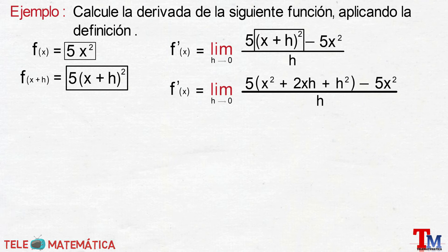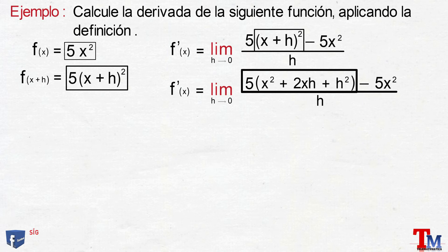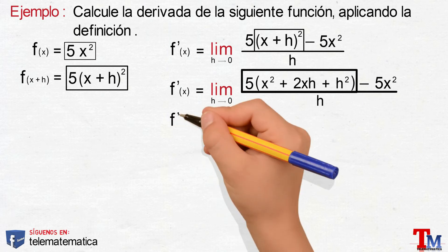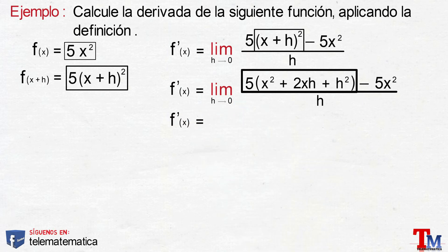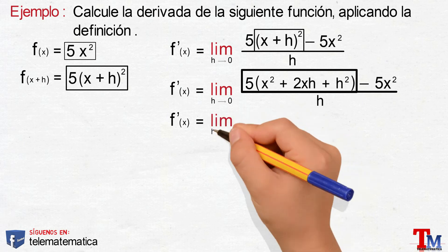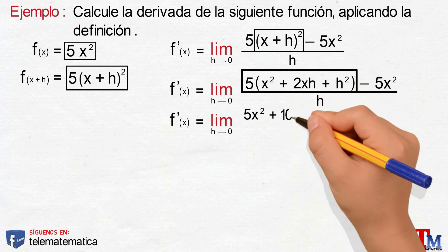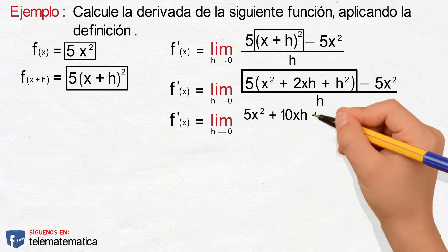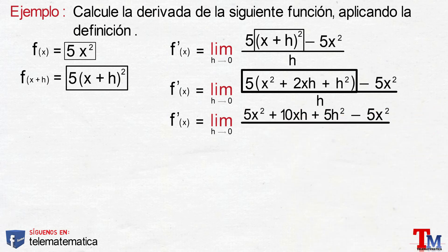Para el siguiente paso, resolveremos la multiplicación aplicando la propiedad distributiva, y nos quedaría que la derivada de la función va a ser igual al límite cuando h tiende a 0, de 5x elevado al cuadrado más 10xh más 5h elevado al cuadrado, menos 5x elevado al cuadrado, y todo dividido para h.